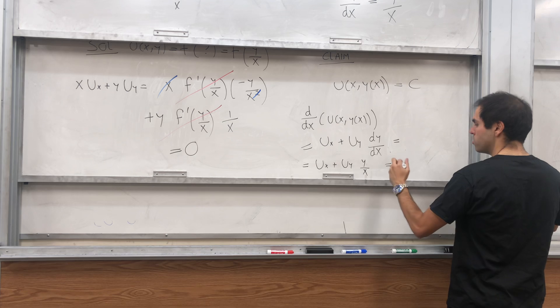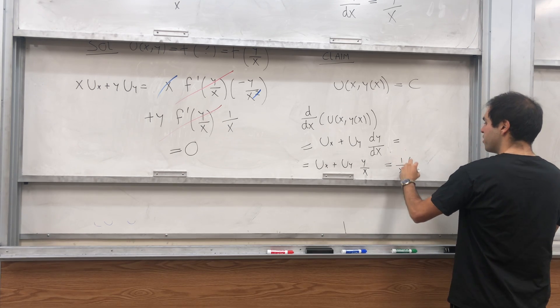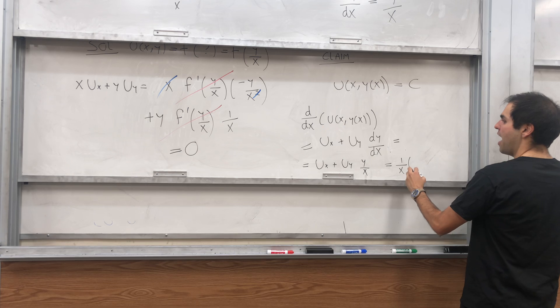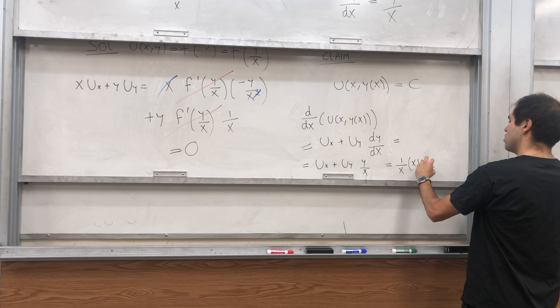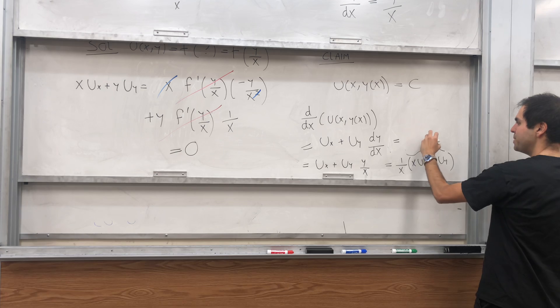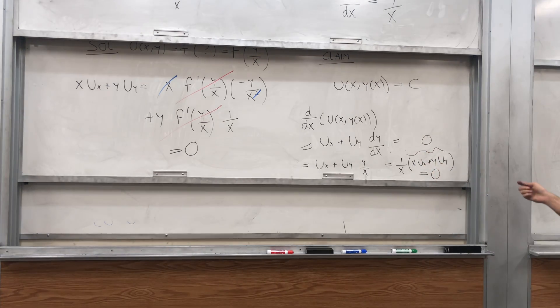And if you want to put this on a common denominator, you get 1 over x, and then x u_x plus y u_y, and by the PDE, this is 0.